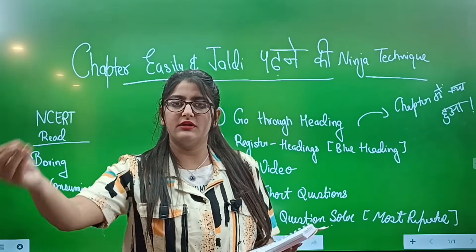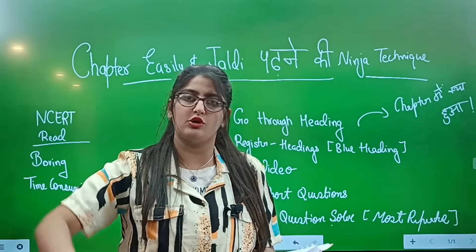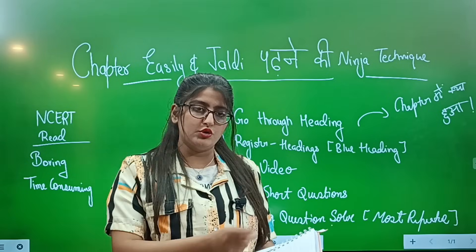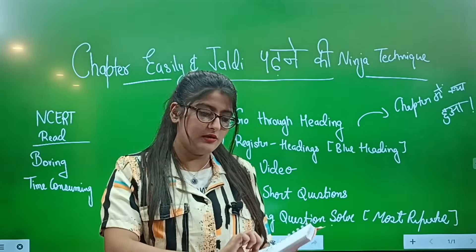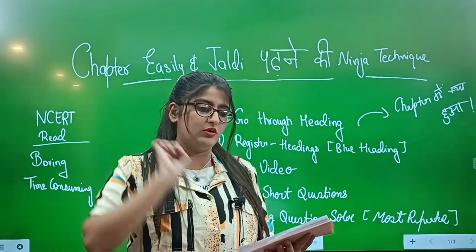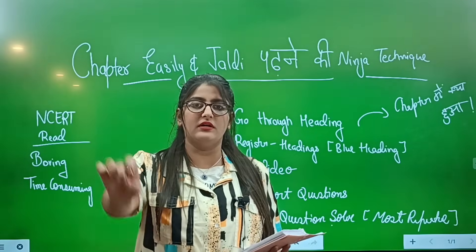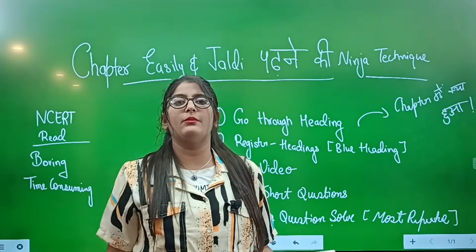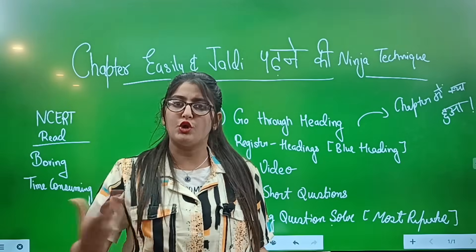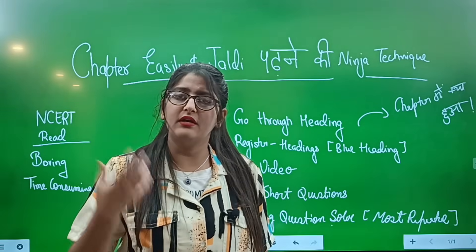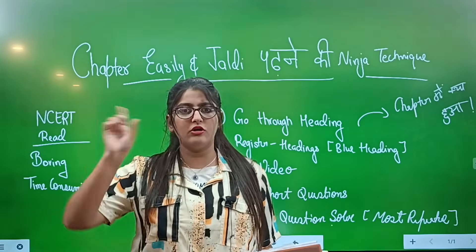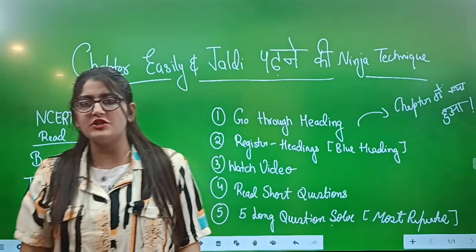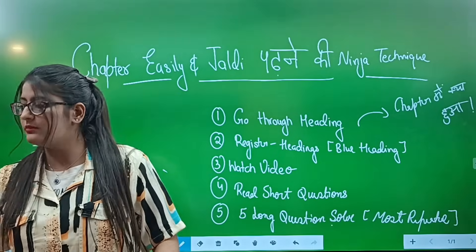For example, for the Unification of Italy I am going to make a timeline. For the consequences of shock therapy — what happened to the Russian currency, the currency collapsed — these are 4 key points. Short notes for revision help you retain things long-term and move to the next topic.